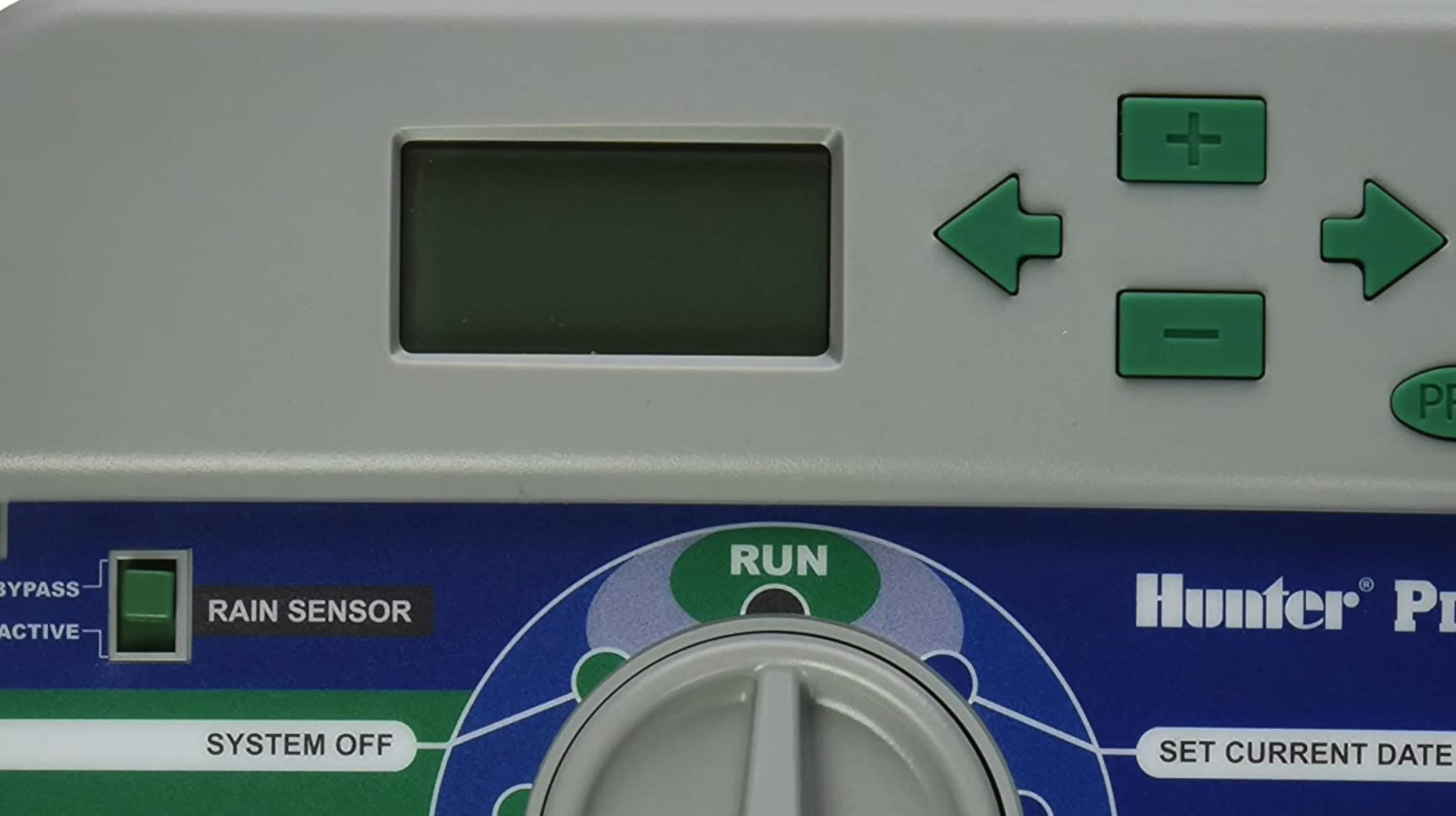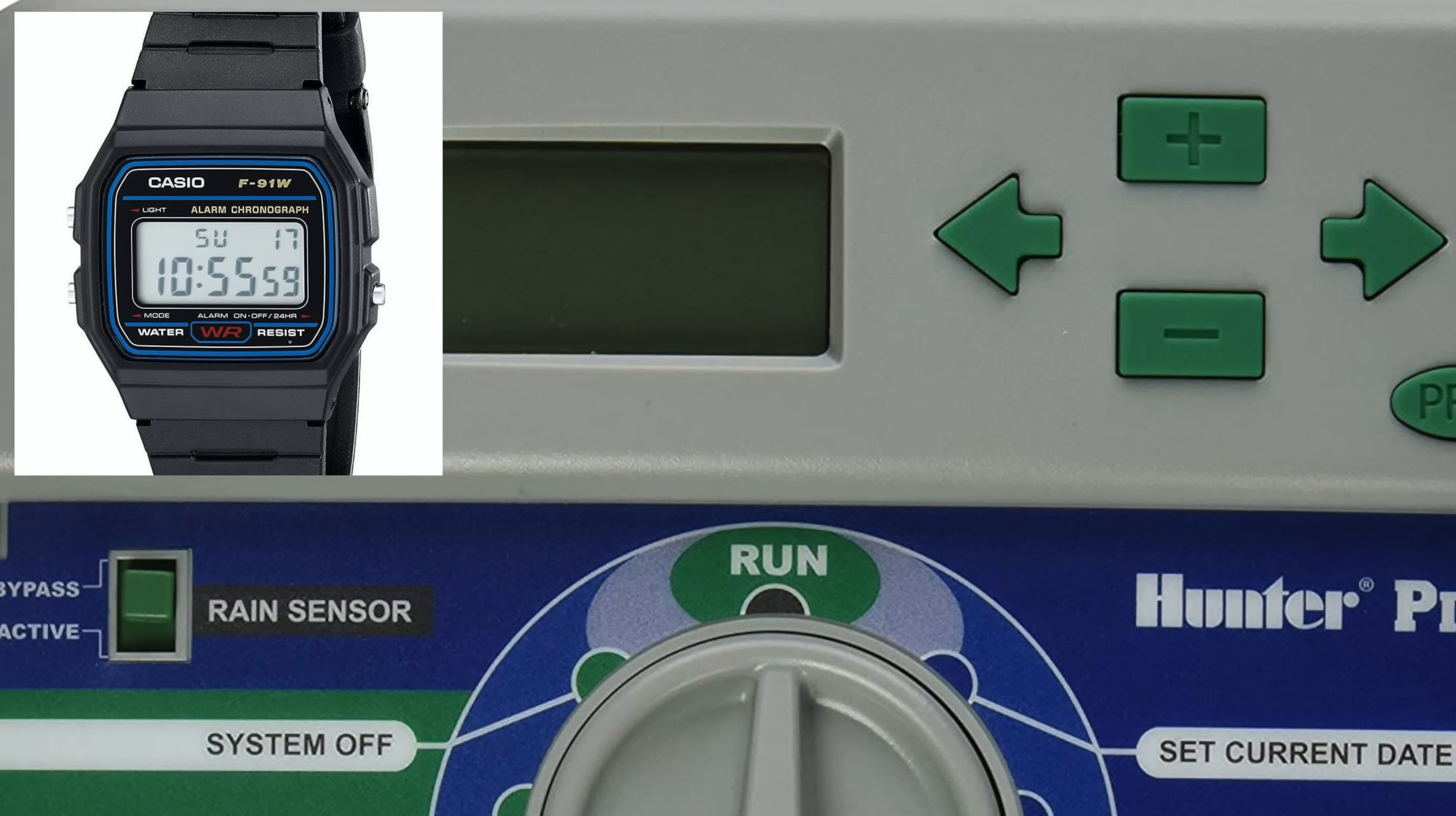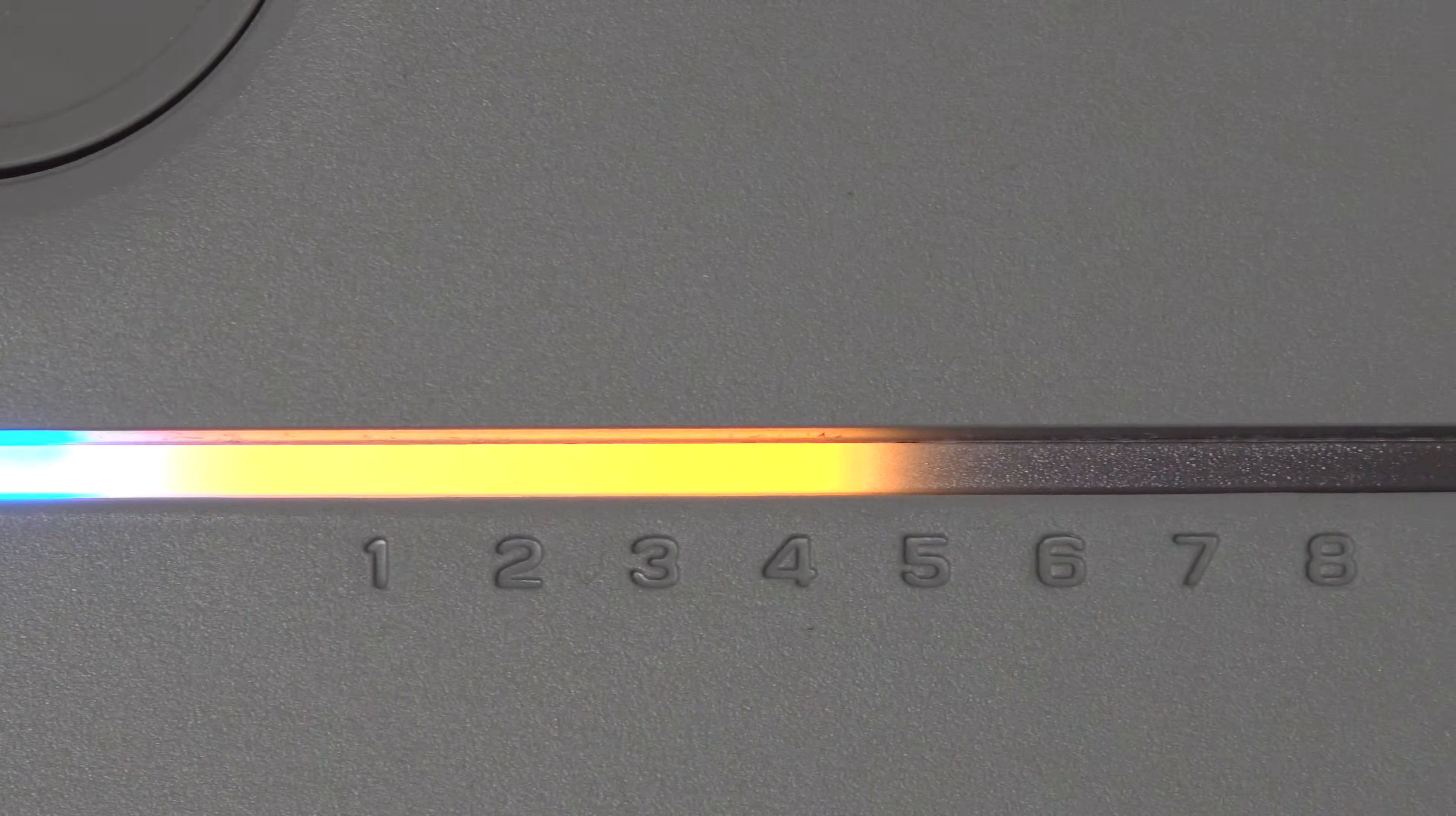These knobs and liquid crystal displays are technology back from the 70s. But fortunately, there's a better way to run your sprinklers, and that's by using a system called Rachio.